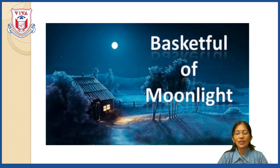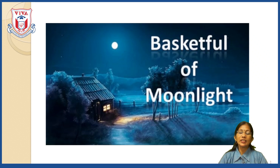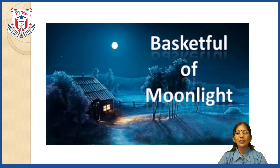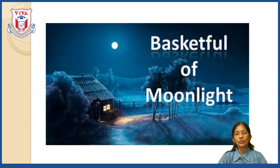In this poem, a boy requests the moon to give him a basketful of moonlight or shades of moon. The boy requests the moon to give him moonlight because he wants his father to return home early. He also requests a basketful of moonlight to light a path so his father can return home early and tell him fairy tales.